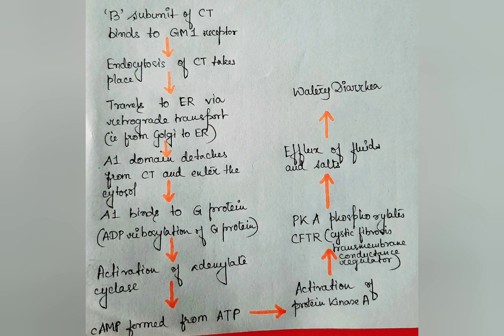Addition of one or more ADP-ribose moieties to a protein is called ADP ribosylation. This ADP ribosylation of the G protein locks it in its active state, or GTP-bound state, and this results in high production of cyclic AMP.